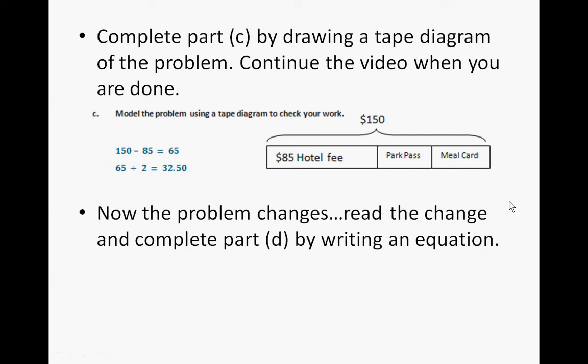So now the problem is going to change. Read the change and complete part D by writing an equation. All right, for part D, again, you could write it in two different ways. You can have 2.89 plus 3 times W equals 10, or 3 times W plus 2.89 equals 10.